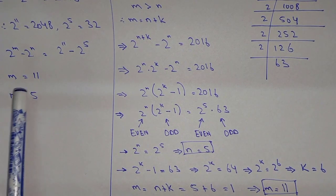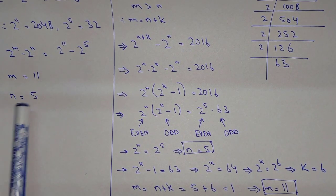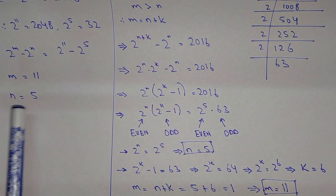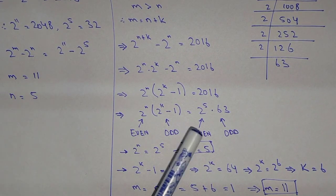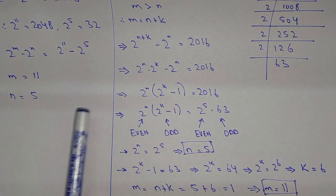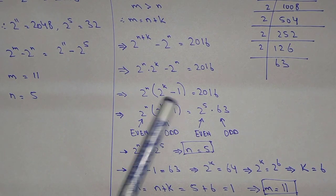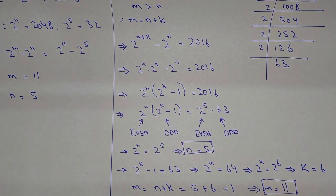So you can see that both methods give m equals 11 and n equals 5. These are two different methods. I hope you understand. Thank you for watching this video.